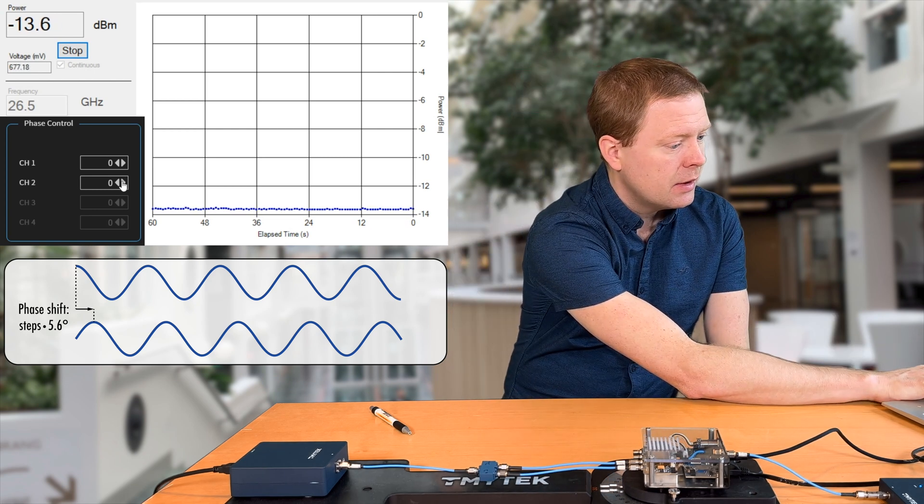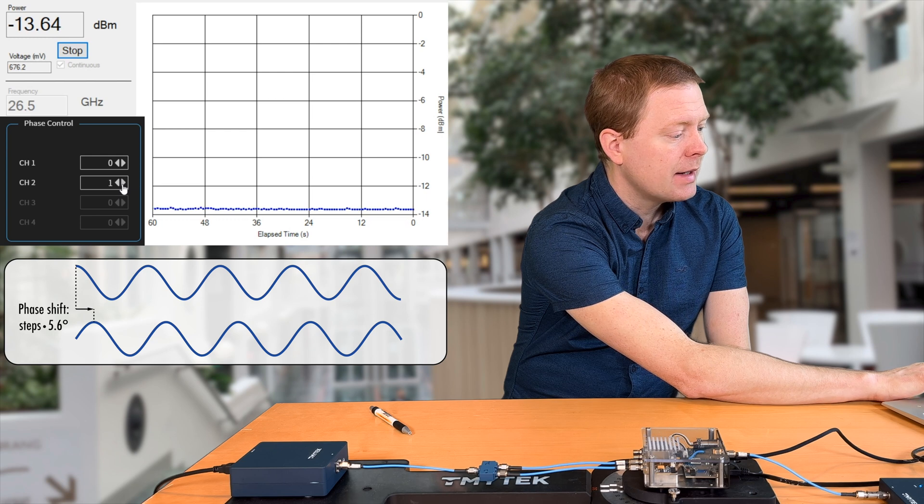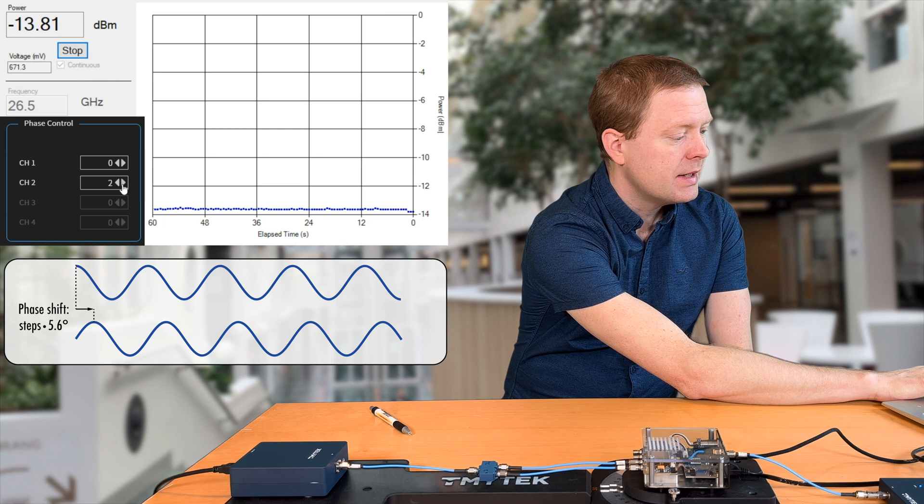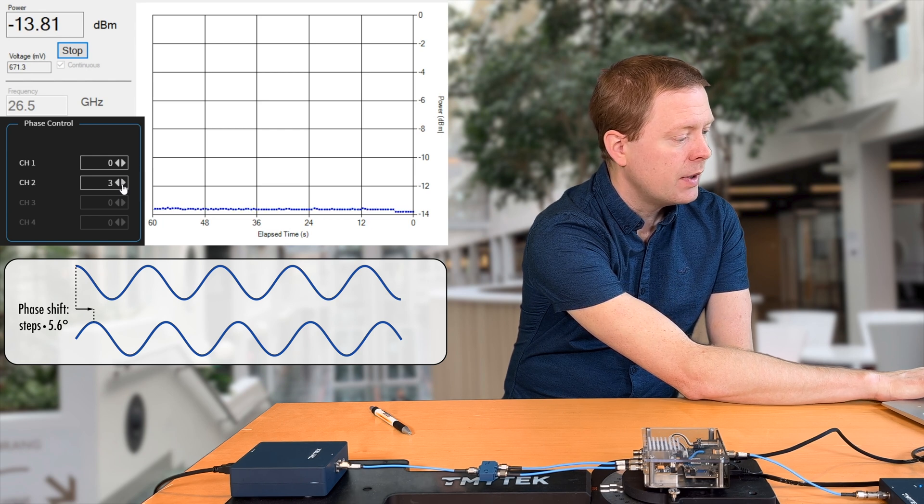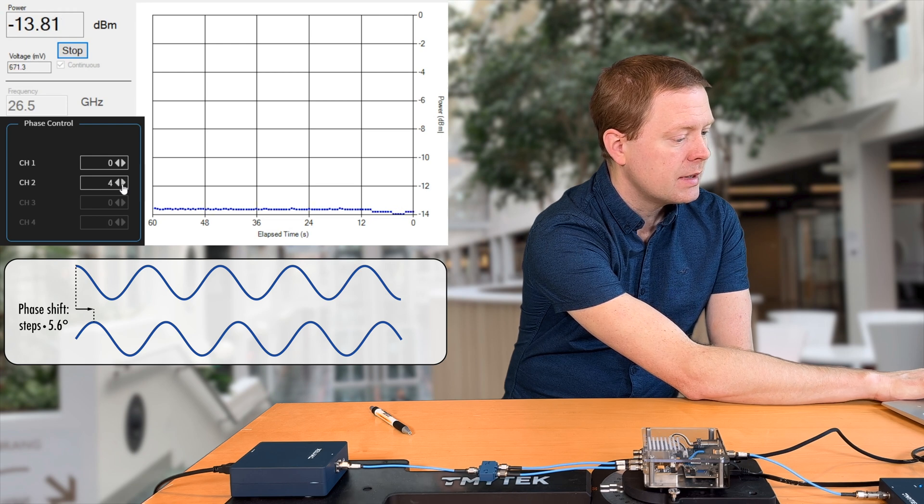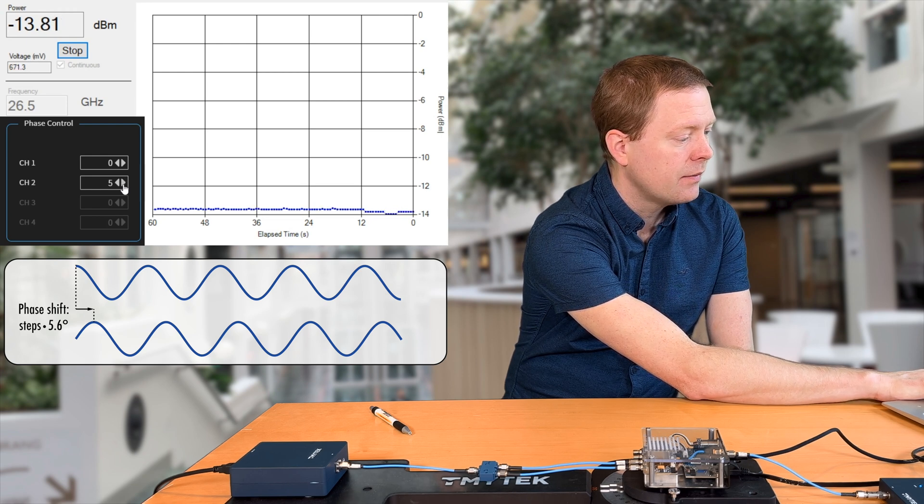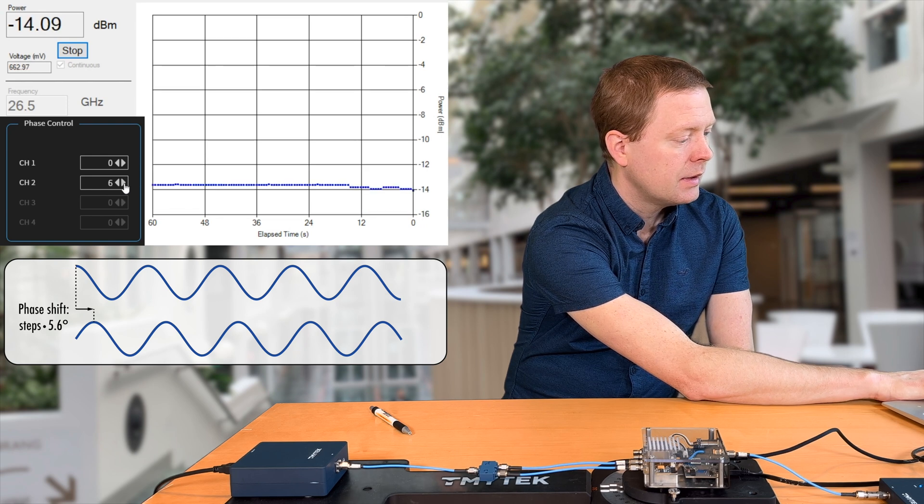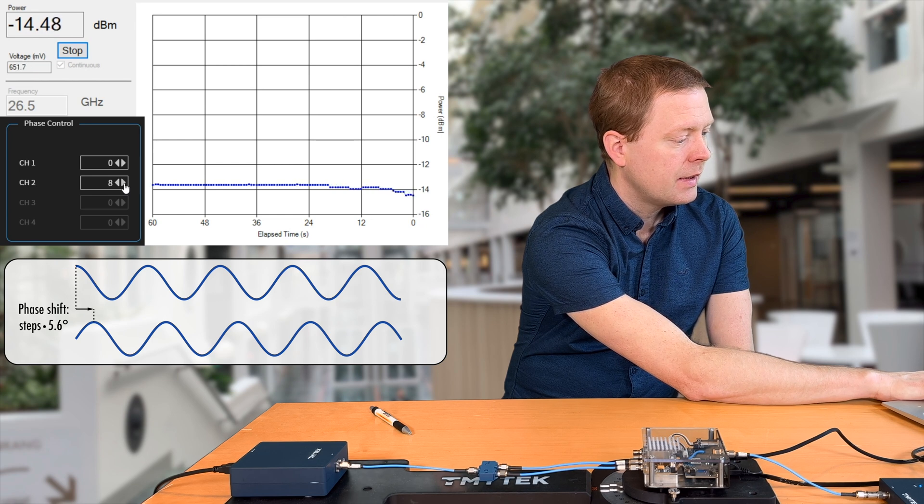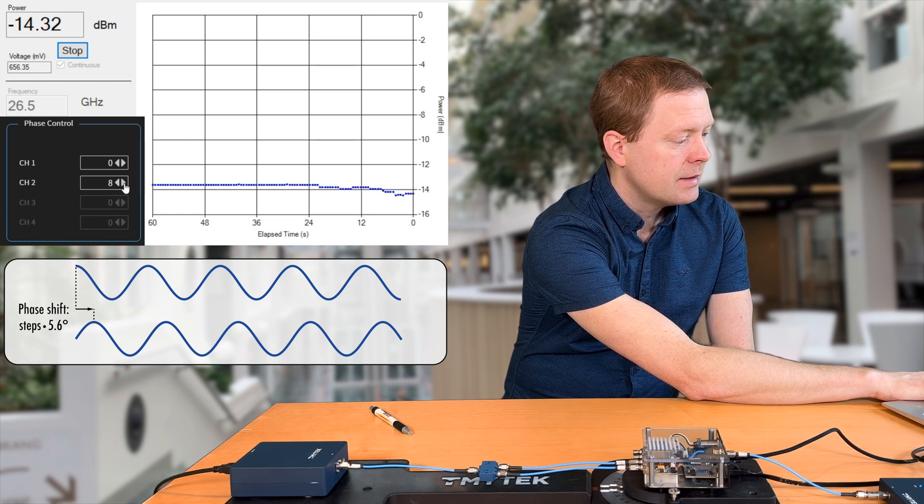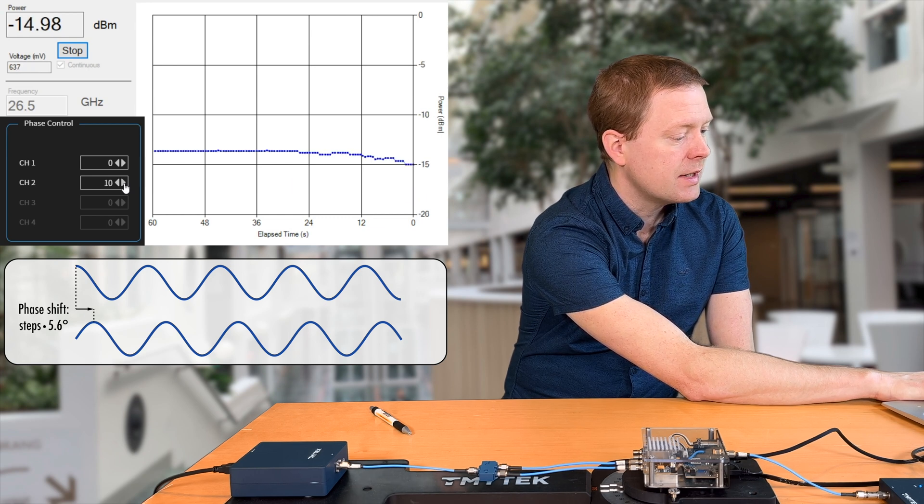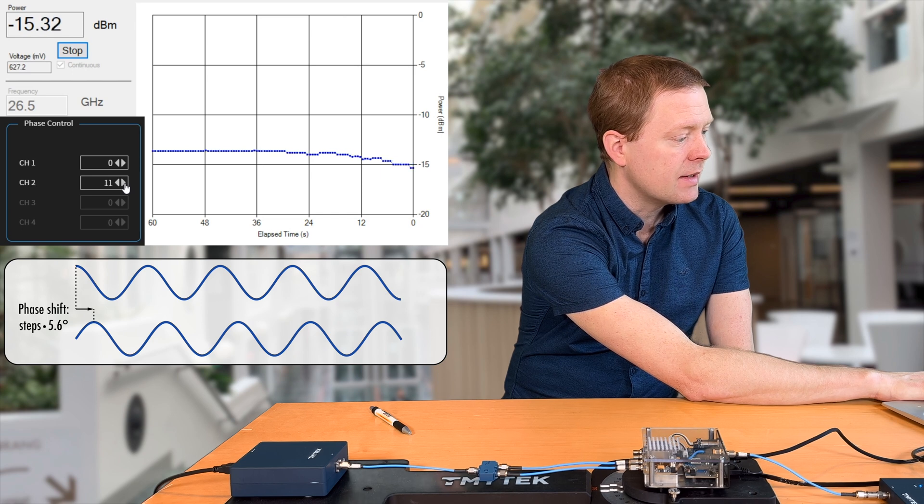So if I start, go to 1, there is barely any change, 2, we see now a small loss, 3, further loss, 4, see that there are still some fluctuations here, 5, 6, 7, 8, 9, 10. Now we start to see the more drastic reductions in received signal power.